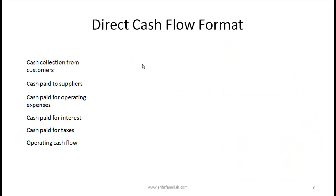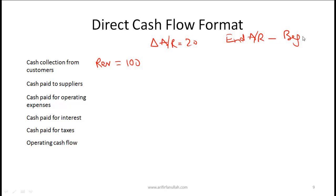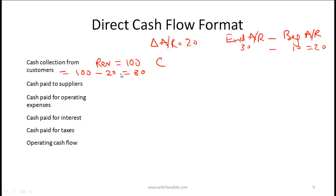For cash collection from customers: start with revenue from the income statement — say revenue is 100. If accounts receivable changed by 20 (ending AR of 30 minus beginning AR of 10), that increase of 20 means cash collected from customers equals revenue minus the change in accounts receivable: 100 minus 20 equals $80.